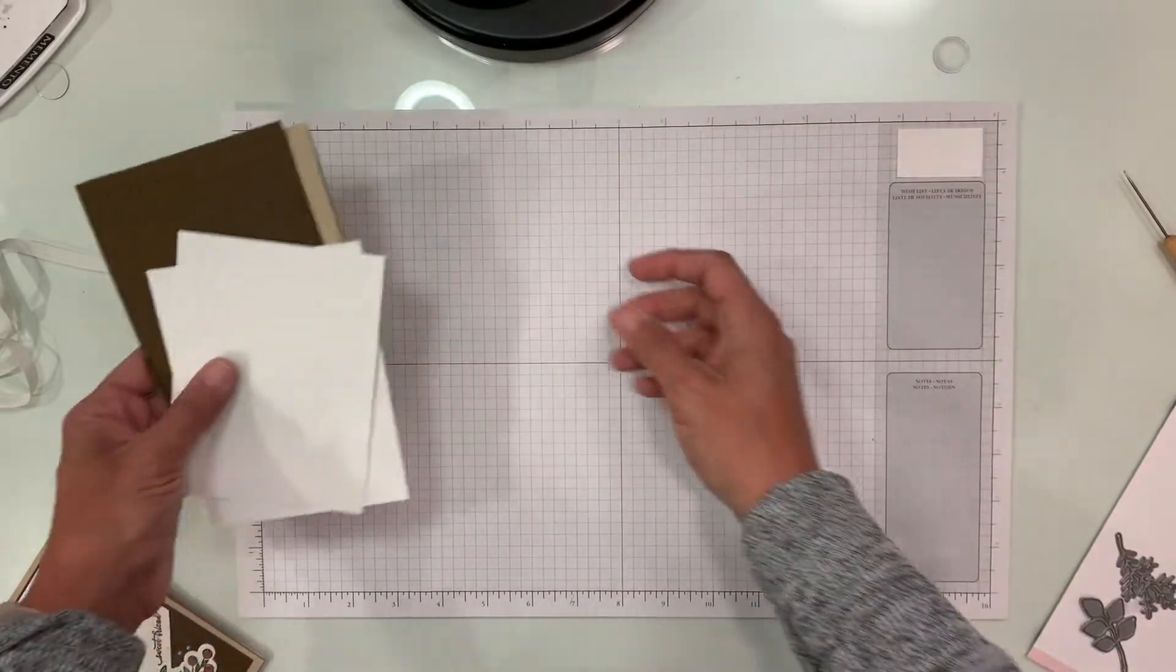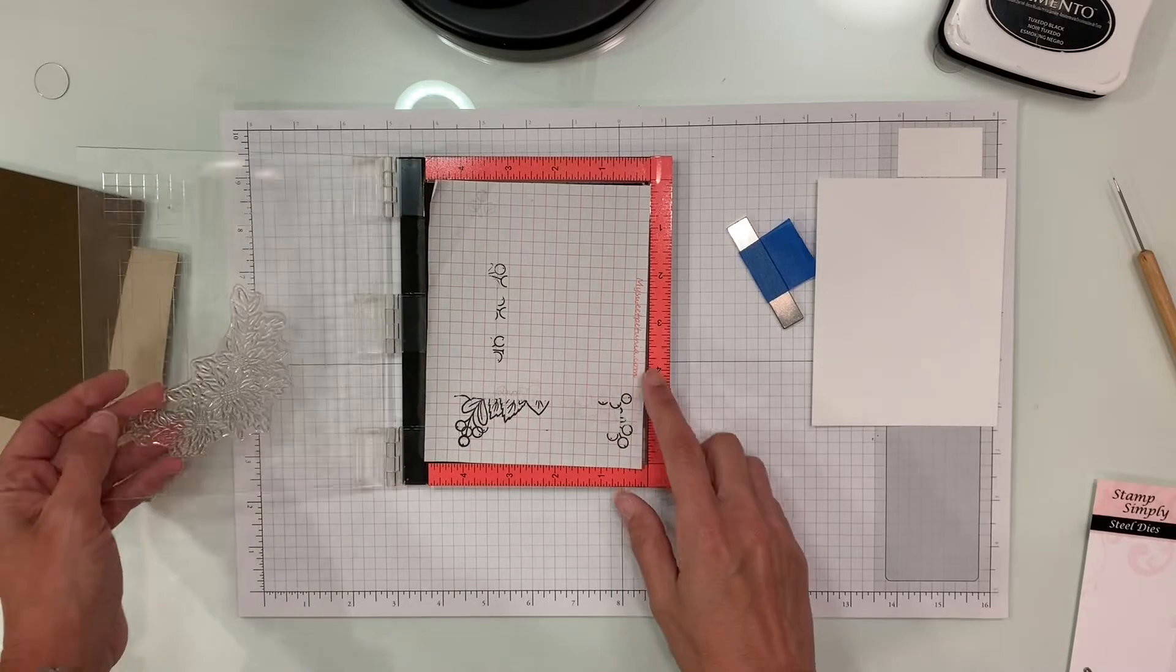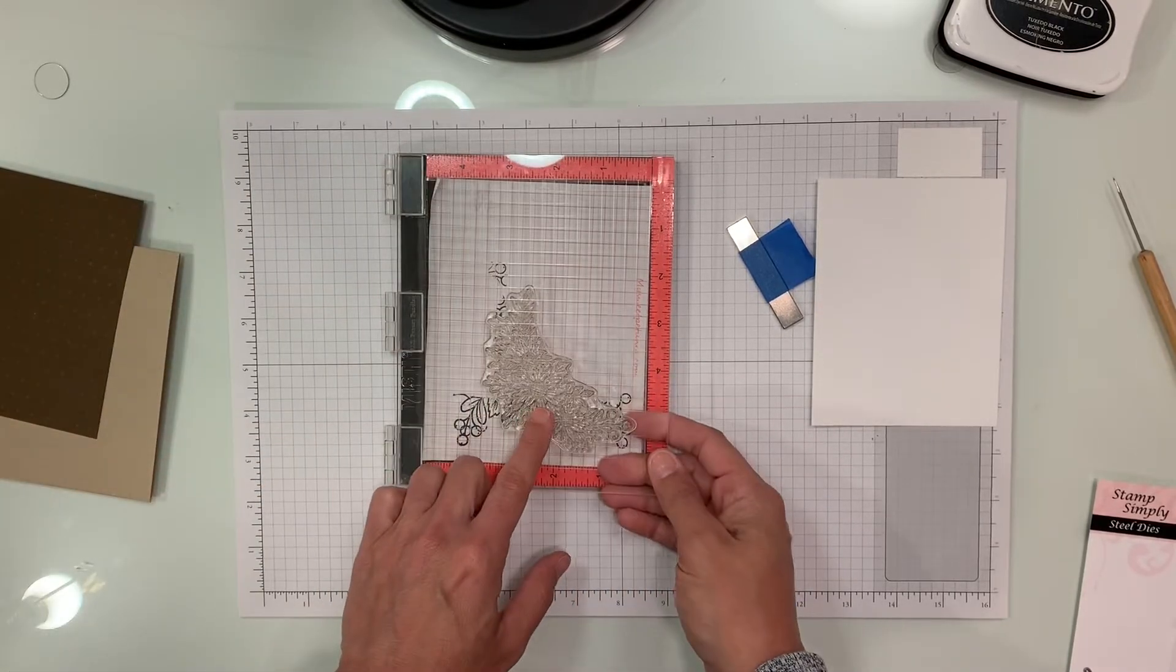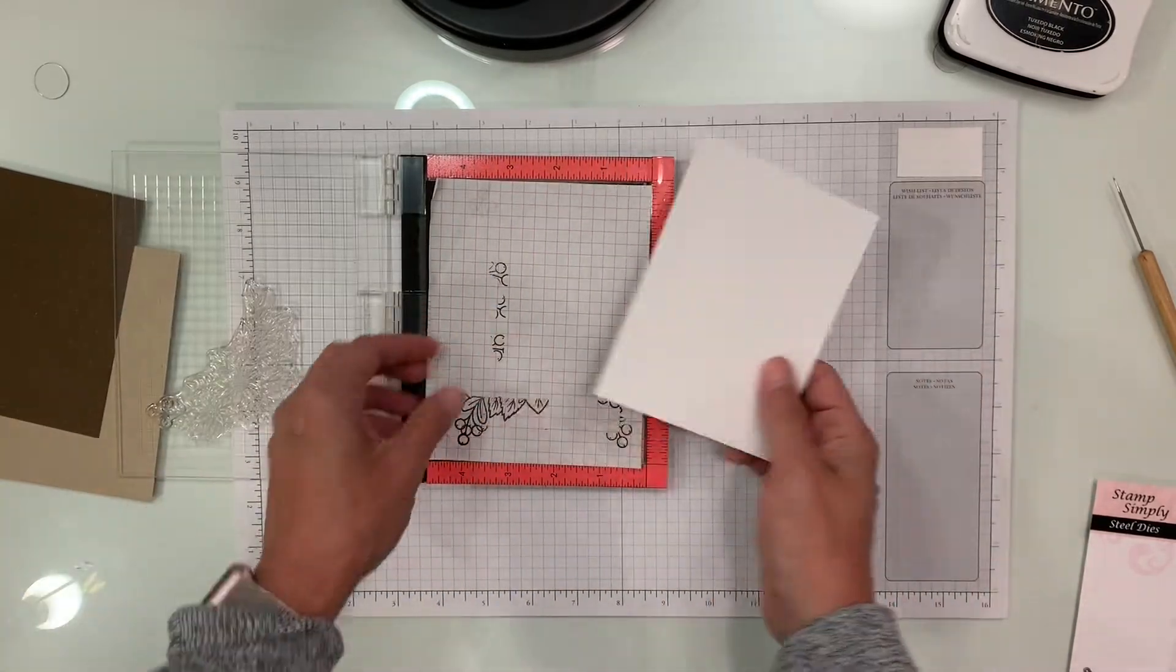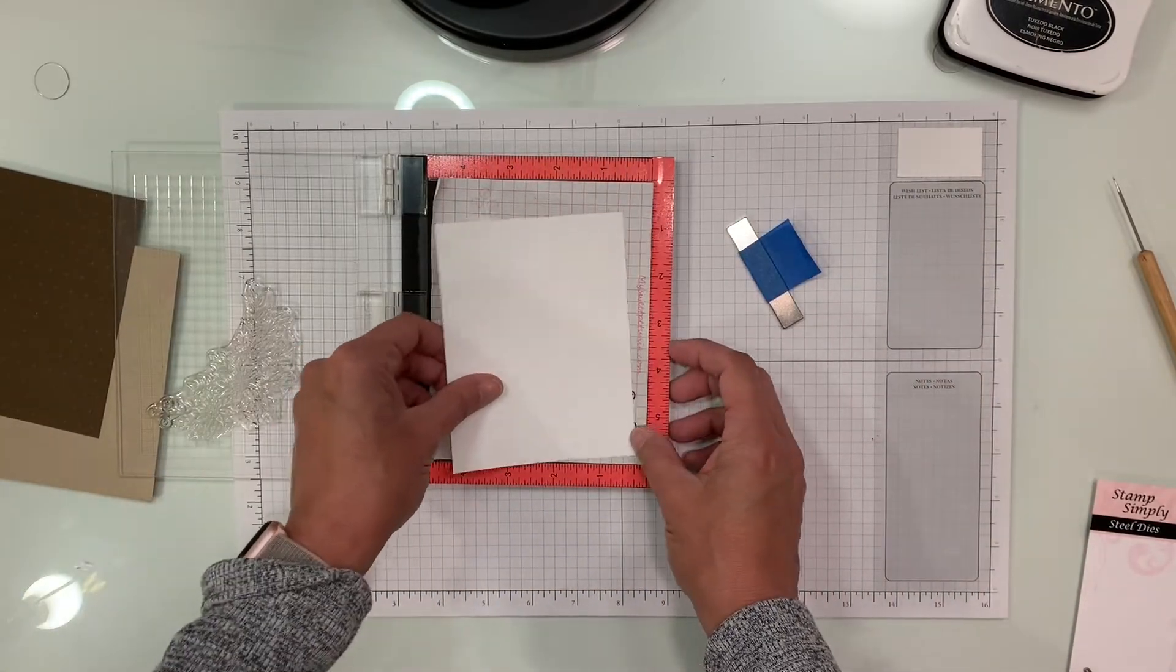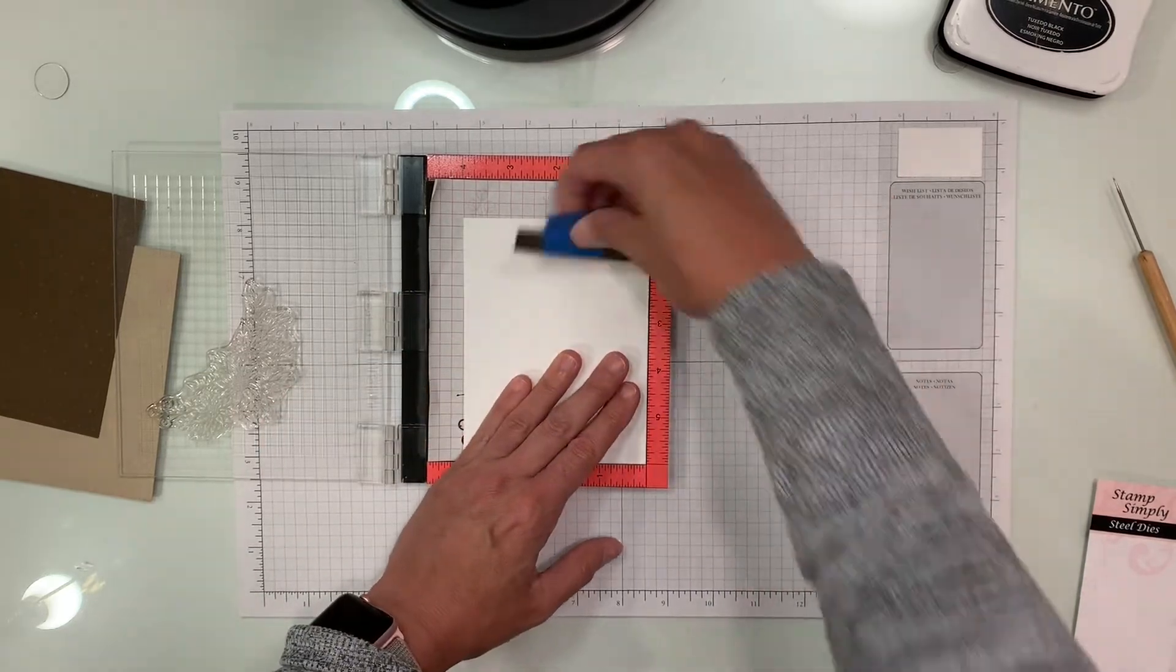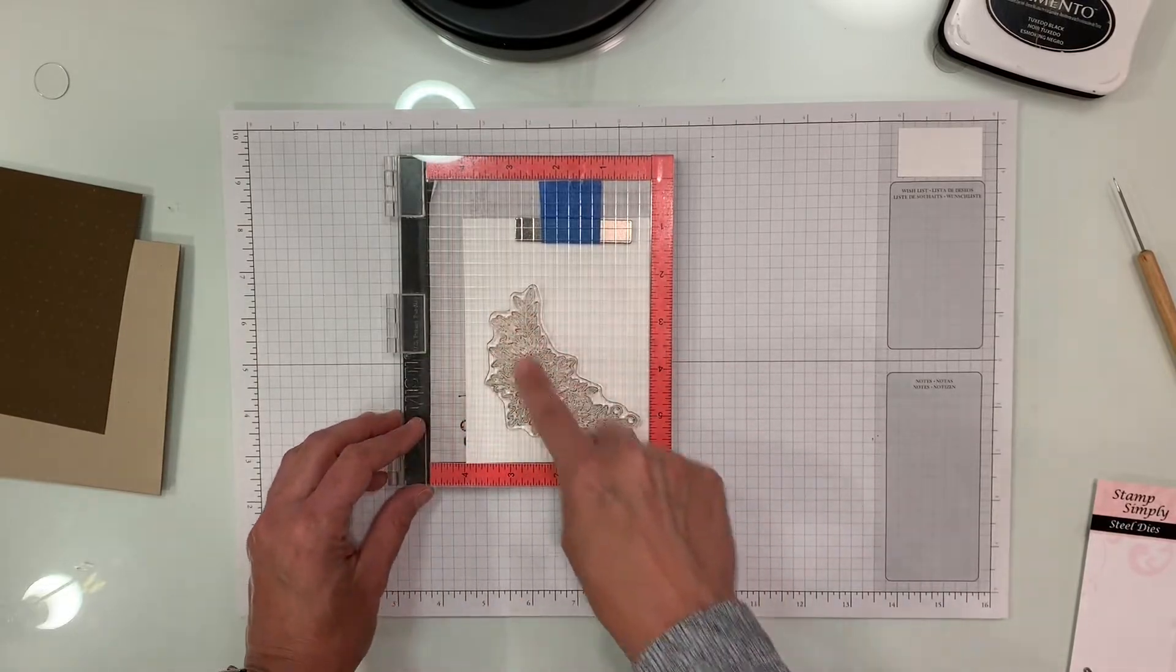Let's go ahead and get started with stamping the image. The first thing we're going to do is stamp the white panel for the front of the card. So I've gone ahead and mounted my floral cluster image with the sunflowers and I'm going to put my paper in my mini MISTI here and secure it with the bar magnet.